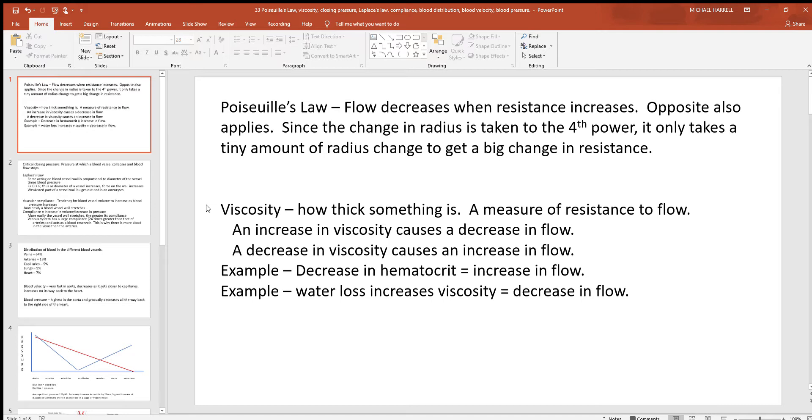We mentioned viscosity back previously with resistance too. How thick something is. Makes sense that if for any reason the blood gets thicker, you'd be moving less of it. Raise the viscosity, more resistance, less flow. Just the opposite would apply too. If you want to change how thick your blood is, quickest way to do that is to change the water balance. You add more water to your blood, that makes it thinner. You take water out of the blood, that's going to make it thicker. Anything that thickens the blood will decrease the flow.